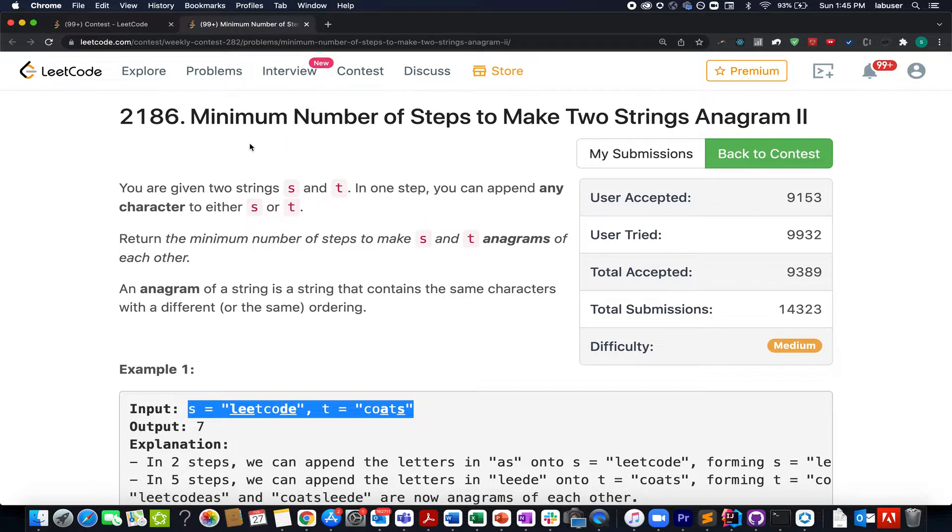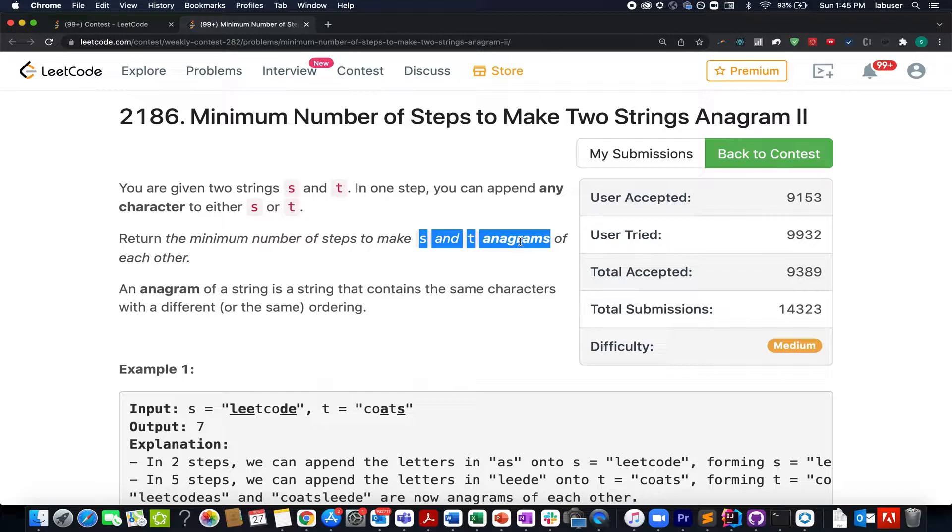Continuing the series, let's shoot for the second question of the contest: minimum number of steps to make two strings anagram part 2. In this question we are given two strings s and t. We need to identify the minimum number of steps needed to make s and t anagrams of each other. In each step you can append any character to s or t.